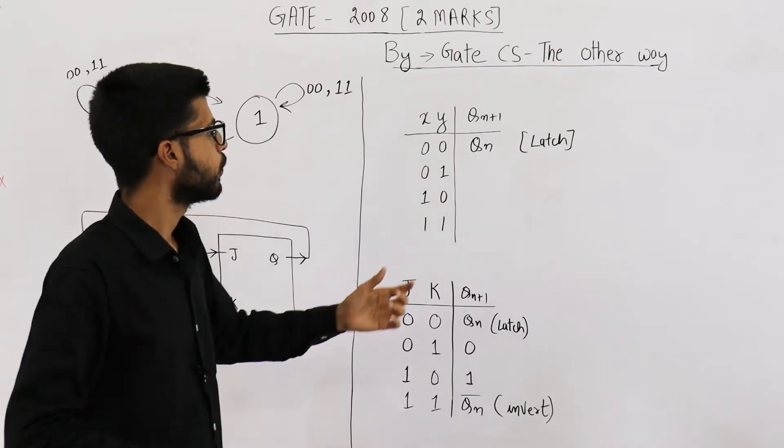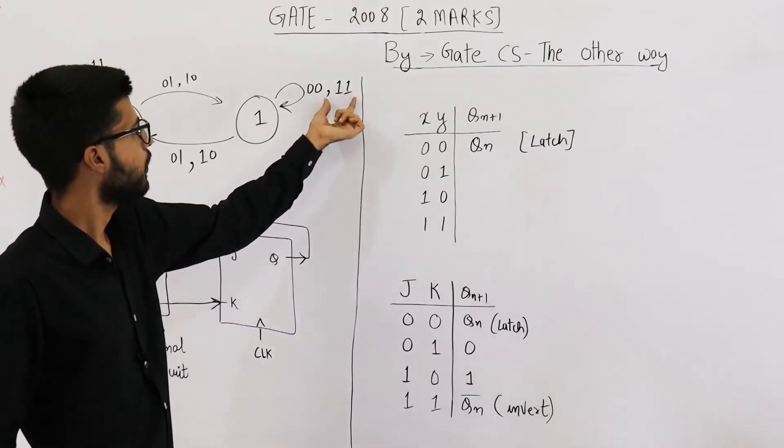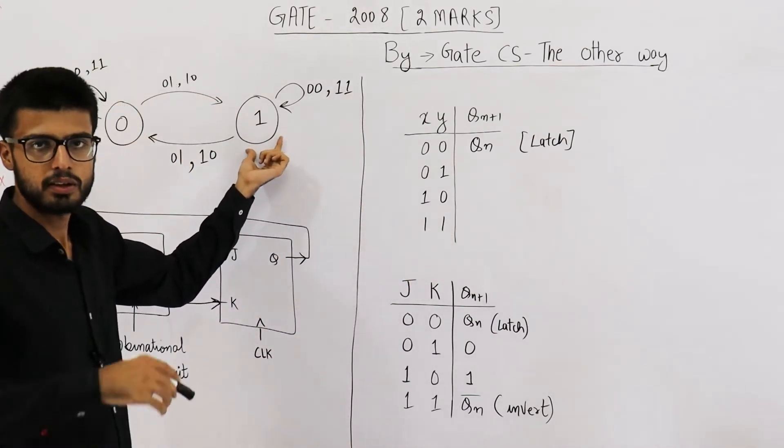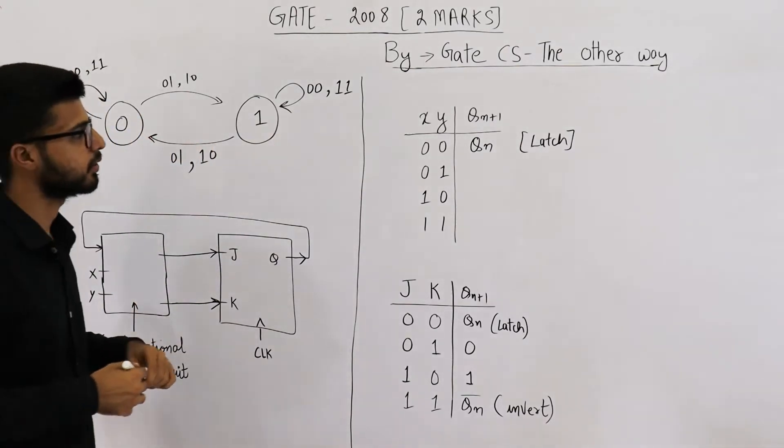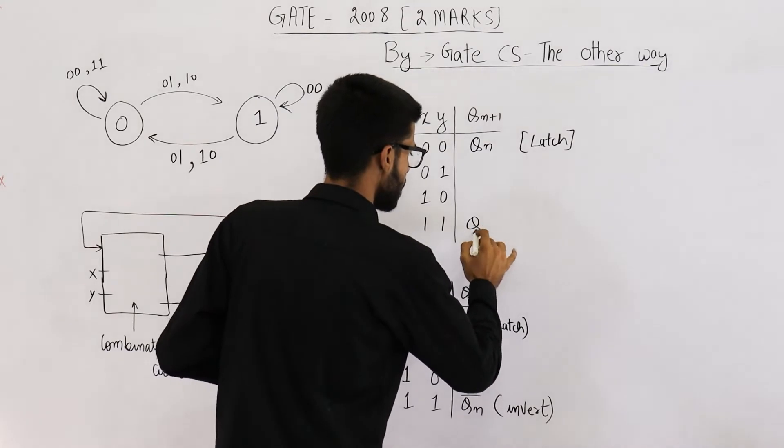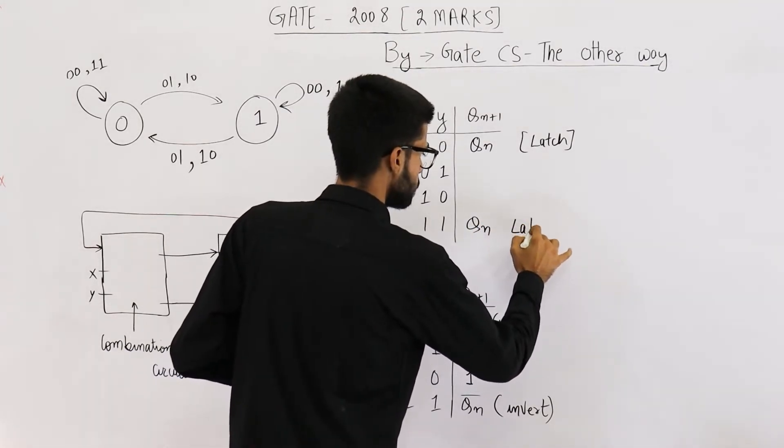Now, let us analyze what happens on 1,1. On 1,1, if you are on state 1, you remain here only. Similarly for state 0. That means this one is also a latch state.